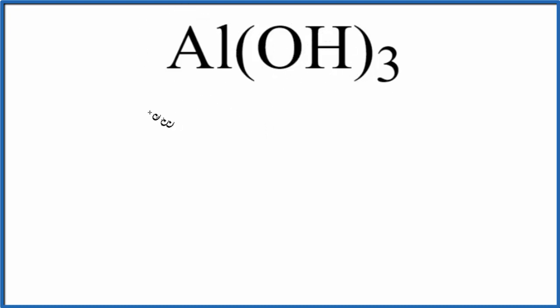So first thing, let's write the element symbols down. We have aluminum, that's Al, then we have oxygen, and then we have hydrogen.